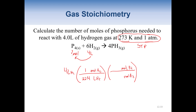That conversion factor is right on the chemistry aid sheet under gas stoichiometry. For the mole ratio, we're going to use the coefficients from the balanced equation — there's one of P4 and six of H2. Now we just solve: multiply across the top and divide away the bottom. We have 4 divided by parentheses 22.4 times 6, which gives us 0.0298 moles of phosphorus.